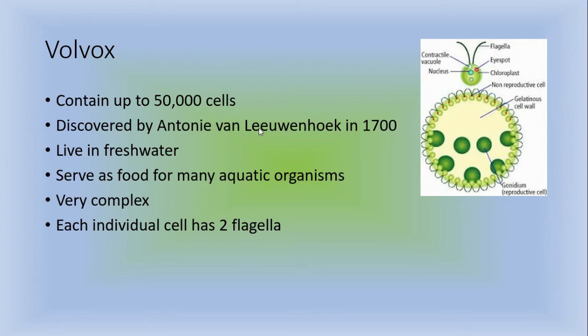The volvox contains up to 50,000 cells. It was discovered by Anthony van Leeuwenhoek in the 1700s. They also live in freshwater. They serve as food for many aquatic organisms. They're pretty complex and each cell has two flagella. So here's a flagella. This is an individual cell and then they get grouped together in these huge colonies.